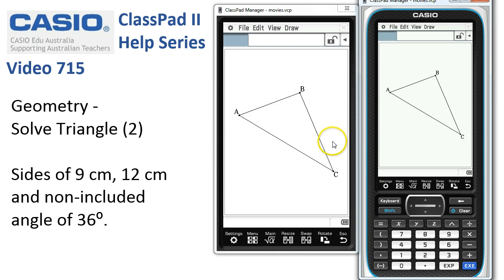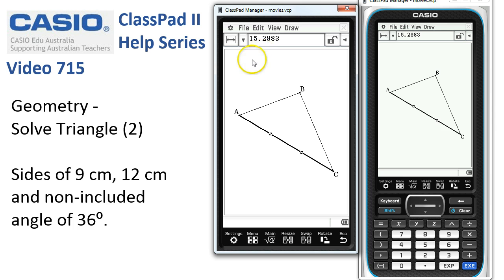So our triangle's drawn and at the moment this length here was 9, this one's 12, and this is the 15.29, the one that we weren't told about. Also we could measure the angles, so here the angle at A is 51.6 at the moment, but this side is a variable one, and in this case there's actually another possibility.